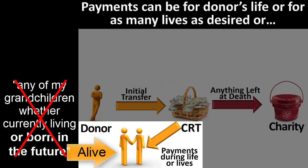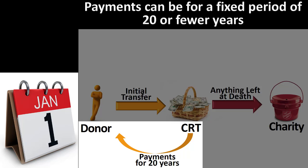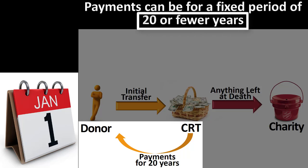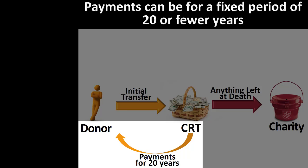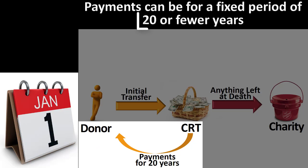This would prohibit a trust that would pay for the lives of, quote, any of my grandchildren, whether currently living or born in the future. Alternatively, a charitable remainder trust can pay for a fixed period of years. However, the fixed period of years cannot exceed 20 years. Thus, charitable remainder trusts can be made to last much longer by selecting payments for a number of lives rather than a fixed period of years.